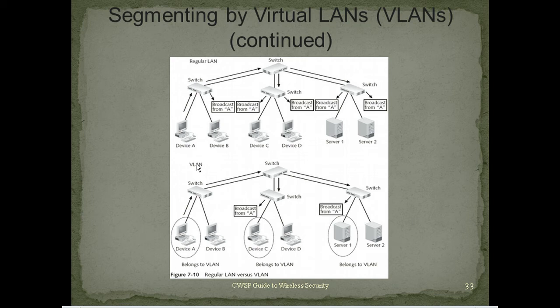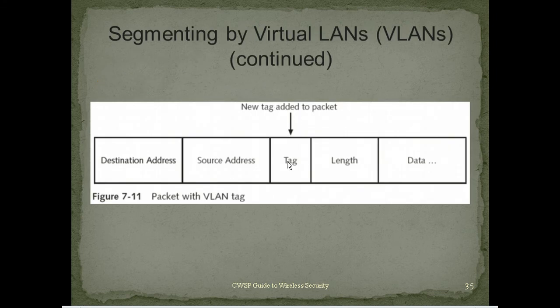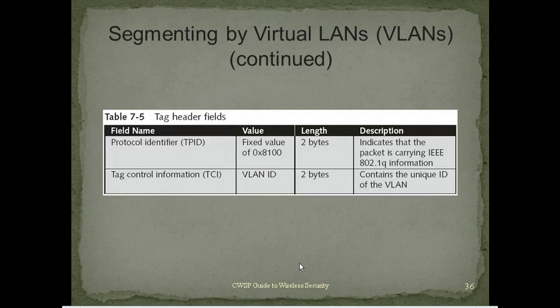A practical VLAN example: if we have an accounting VLAN and Joe from accounting moves from the second floor to the third floor, we can put his computer on the accounting VLAN and he'll be connected to the same network as all his accounting colleagues regardless of physical location. 802.1Q inserts a header within the existing Ethernet frame. Cisco had its proprietary ISL protocol before the standard, but ISL has been removed from newer Cisco switches and 802.1Q is now the standard used everywhere.